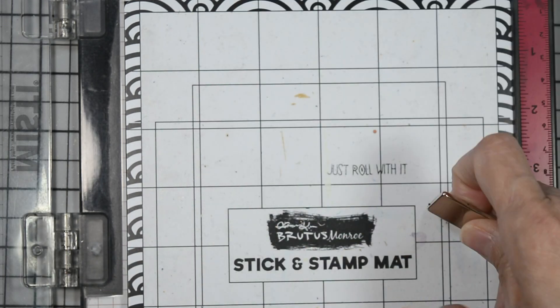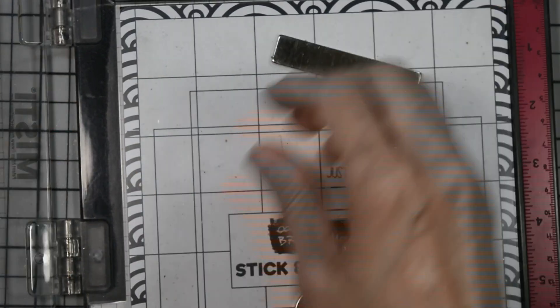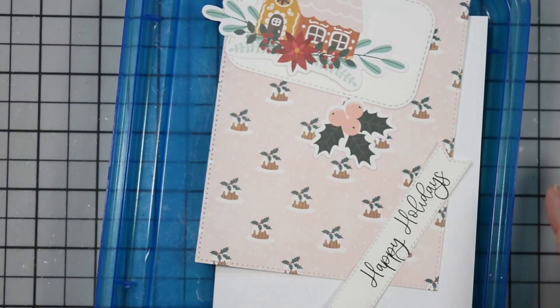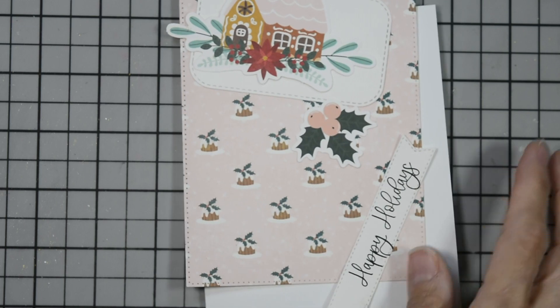Then I'll peel that off the sticky mat. And replace that cover on that sticky mat. And I'll clean my sentiment after the fact. All right. I'm going to bring in the rest of the components here. And we're going to work first with our sentiment.